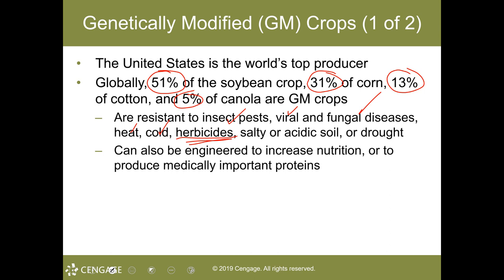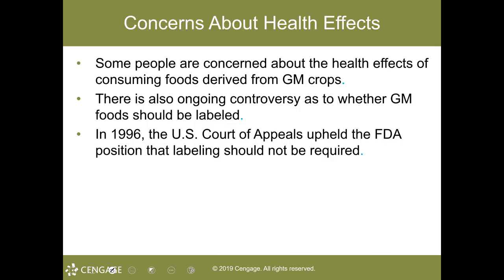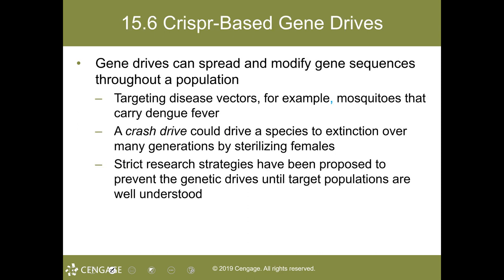GM crops can be engineered to increase nutrition or to produce medicinally important proteins, and those foods are labeled as genetically modified. With CRISPR-based gene drives, modified gene sequences can be spread throughout a population to target disease vectors such as mosquitoes that carry dengue fever.